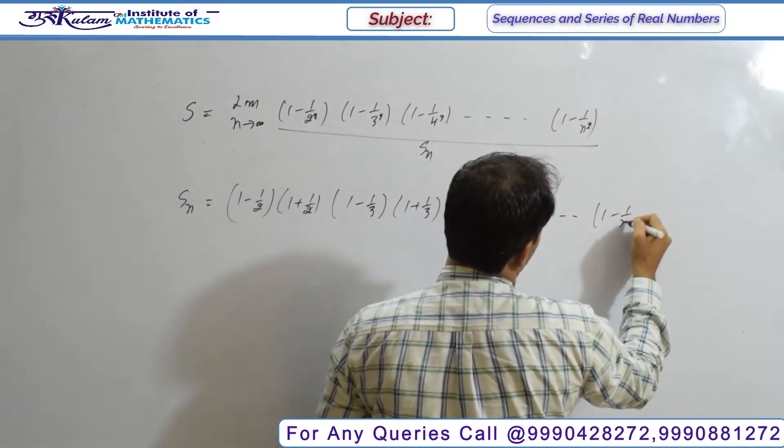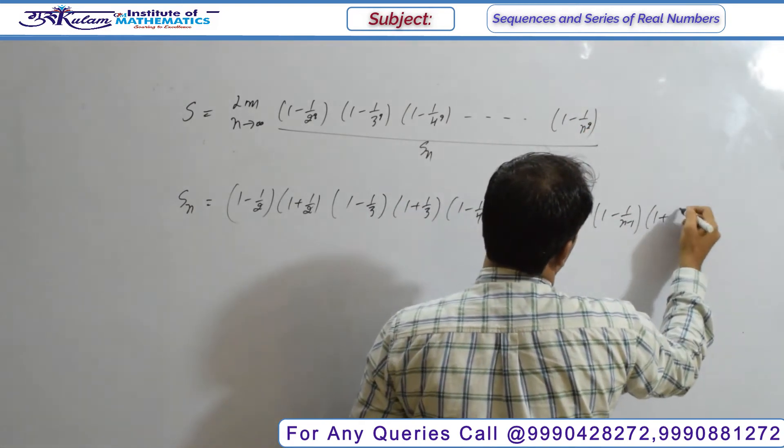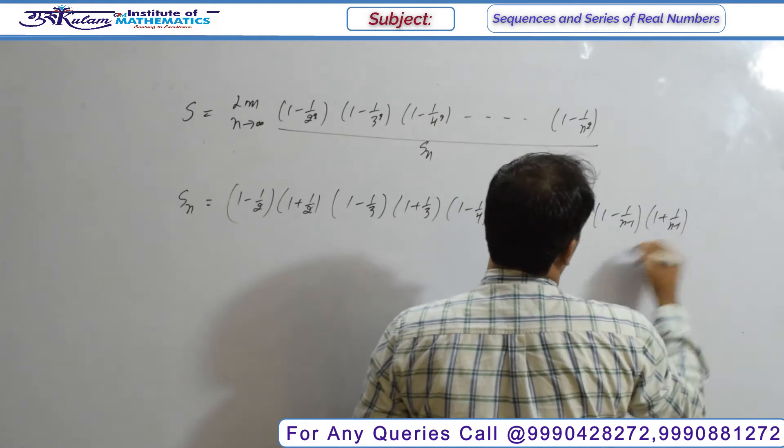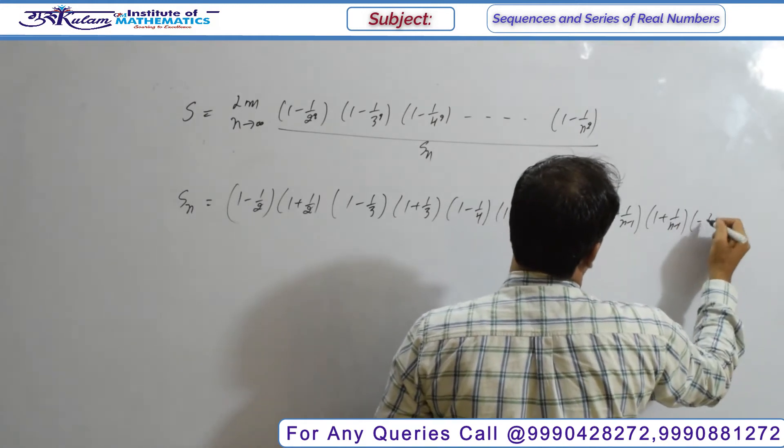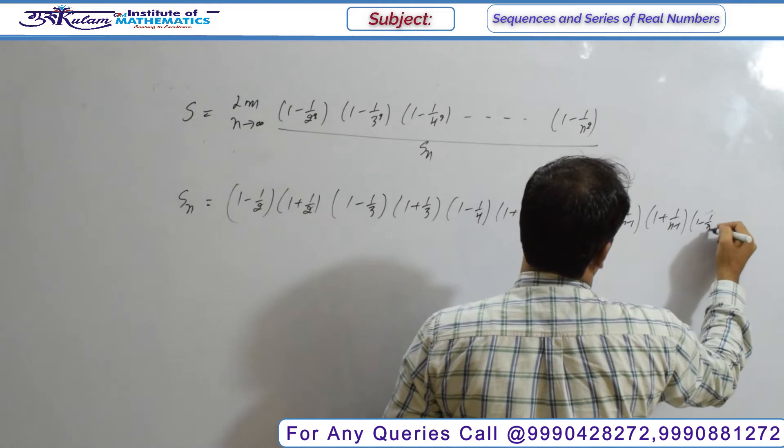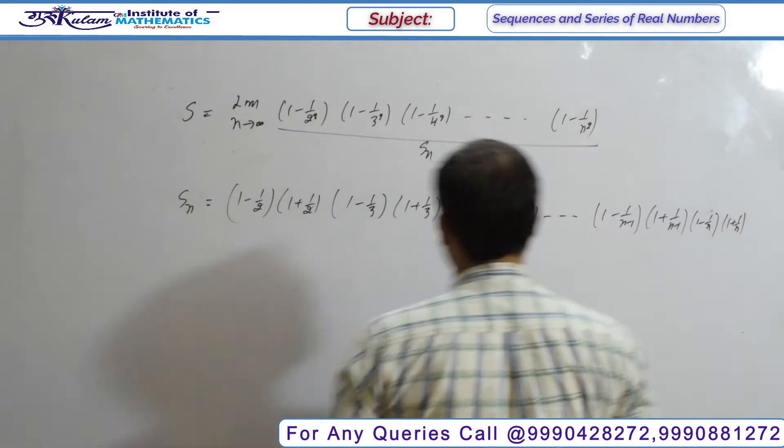The previous term is (1 - 1/(n-1))(1 + 1/(n-1)), and the last term is (1 - 1/n)(1 + 1/n). These are your terms.